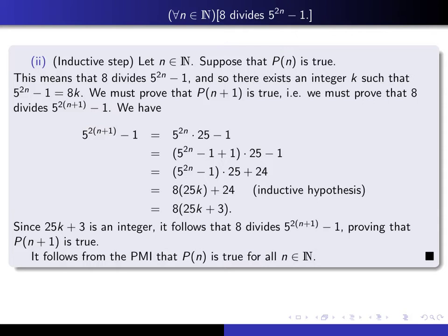Here's my proof. We have 5 to the 2 times (n+1) minus 1. I can factor this as 5 to the 2n times 5 squared, which is 25, so it's equal to this. And now, since we know something about 5 to the 2n minus 1, I'd like to get that in the picture somehow. So we do the old trick of adding and subtracting this minus 1 from the 5 to the 2n.